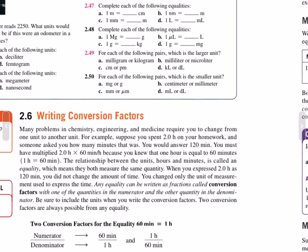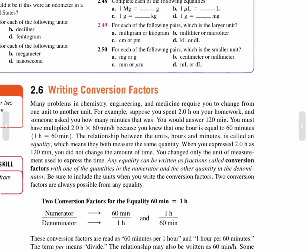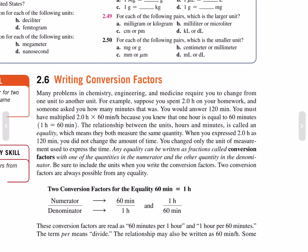Section 2.6: Writing Conversion Factors. Many problems in chemistry, engineering, and medicine require you to change from one unit to another. For example, suppose you spent 2.0 hours on your homework and someone asked you how many minutes this was. You could answer 120 minutes — you multiplied 2.0 hours times 60 minutes per hour because you knew that one hour equals 60 minutes.